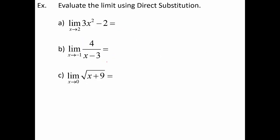If a function is continuous, then the limit and the function value will be the same, and we can use that to evaluate limits by direct substitution. As long as a function is continuous, simply plug in the x value and whatever answer you get is the answer. For example, consider the limit as x approaches 2 of 3x² - 2. This is a polynomial with domain all real numbers, so it's continuous everywhere. Directly substituting x = 2: 3(2)² - 2 = 10. The limit as x approaches 2 of 3x² - 2 is 10.